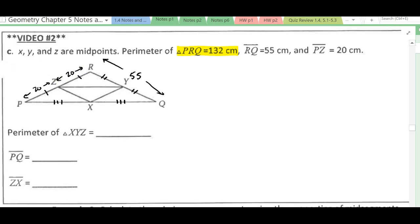And then since RQ is 55, RY and YQ are each going to be half of that. So 55 divided by 2, we've got 27.5 from here to here and here to here.